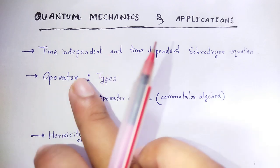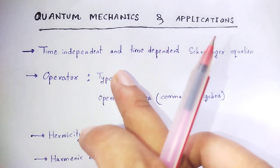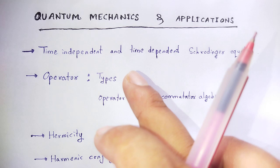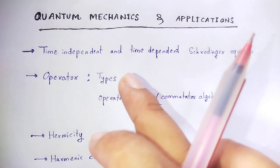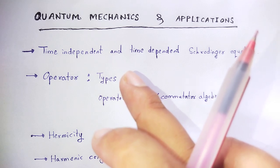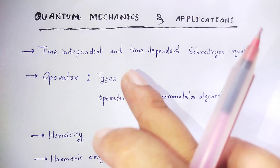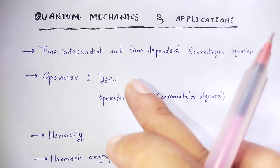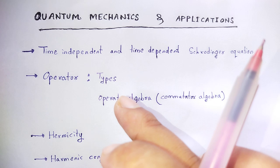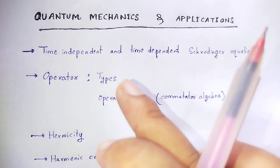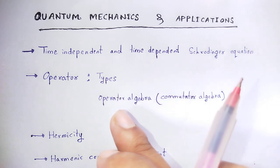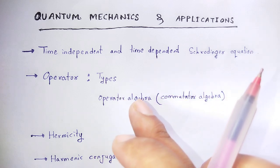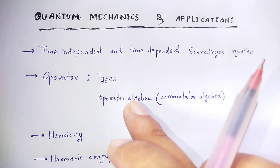Next topic is operators. We'll discuss the definition and types of operators, including linear operator, square operator, differential operator, null operator, and identity operator.